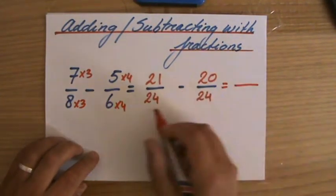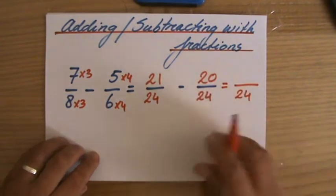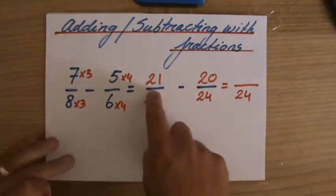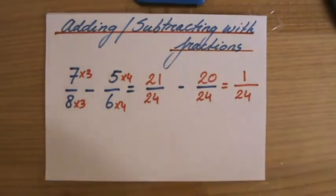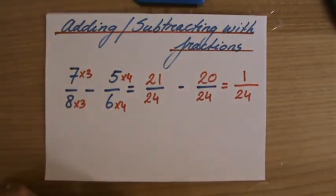How many 24s do I have? The denominator doesn't change. I have 21. I eat 20 of them. I have 1 left. Fantastic. That is the answer to this problem.